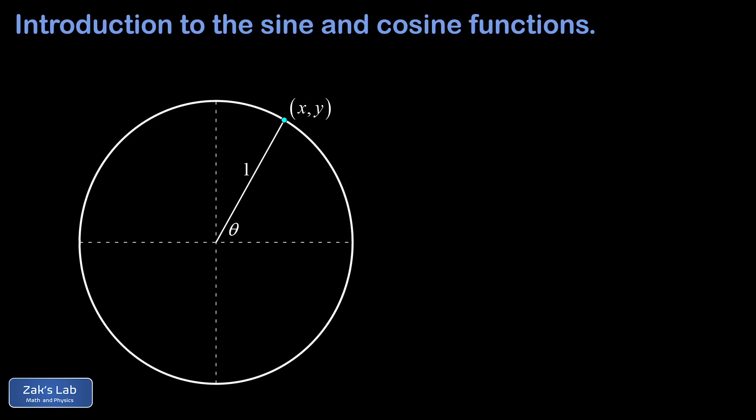Let's get things started with the basic definitions of sine and cosine of an angle. What we're looking at here is a picture of the unit circle — a circle of radius one centered at the origin. We're interested in a point on the unit circle that lies at an angle of theta measured counter-clockwise from the positive x-axis, and that point is labeled as the ordered pair x, y.